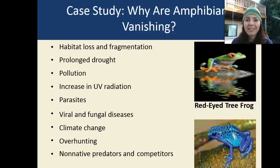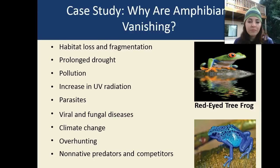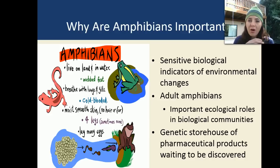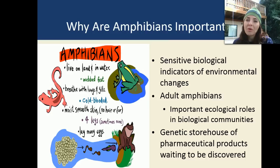One of the biggest indicator species are amphibians. Why are amphibians so important? They're very sensitive biological indicators of environmental changes because they go through so many different phases in their life cycle, and all different phases are susceptible to different environmental factors. Adult amphibians play important ecological roles in biological communities. They are also a genetic storehouse of pharmaceutical products waiting to be discovered — meaning we can use them for medicinal purposes, finding different cures for different types of diseases. So they're very important as far as research goes.